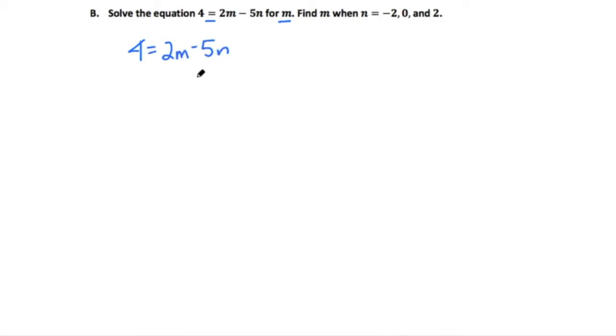If we want m by itself, let's move the n's by using our inverse operations. We're going to add 5n to both sides. So, we have 4 plus 5n is equal to 2m. Okay.